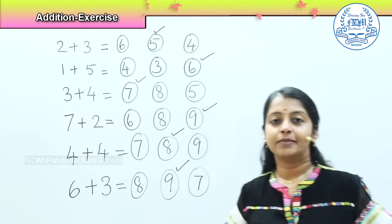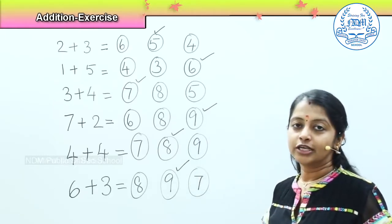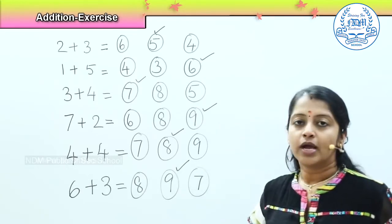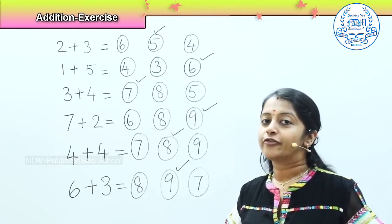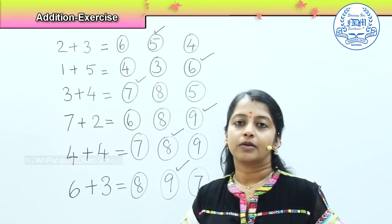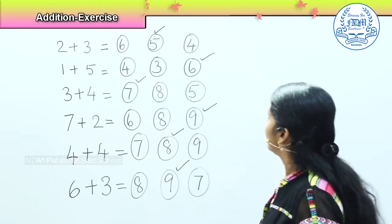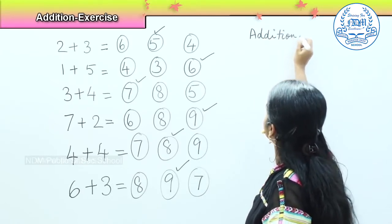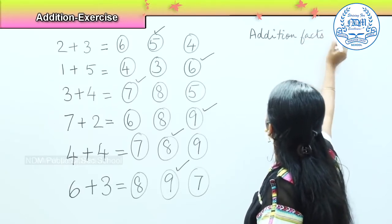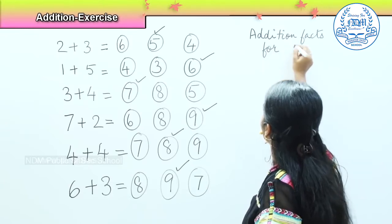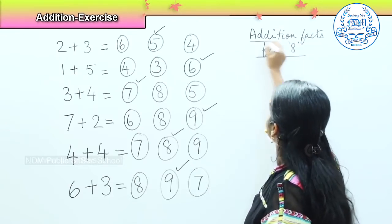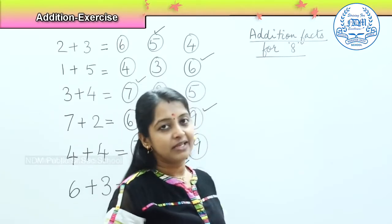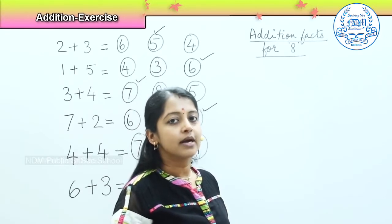Now I will be giving you the next revision for the addition facts we learned. I will be giving you a few numbers and you need to find the addition fact for that particular number. So now we are going to find the addition fact for number 8. I will be giving you 4 numbers, and whichever number makes the addition fact for 8, you need to color that number.